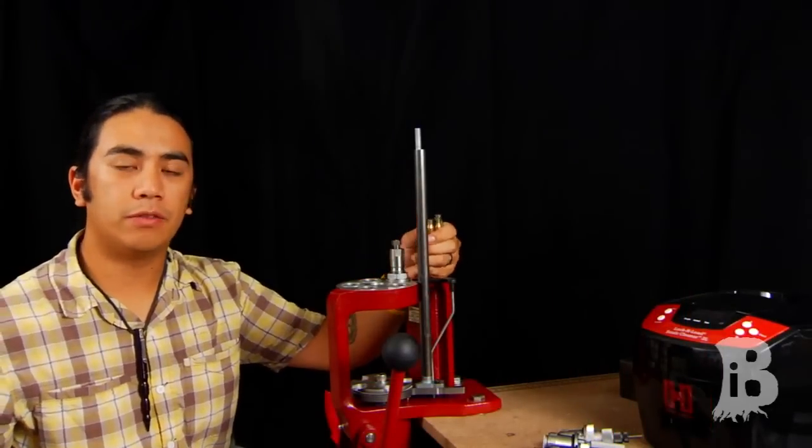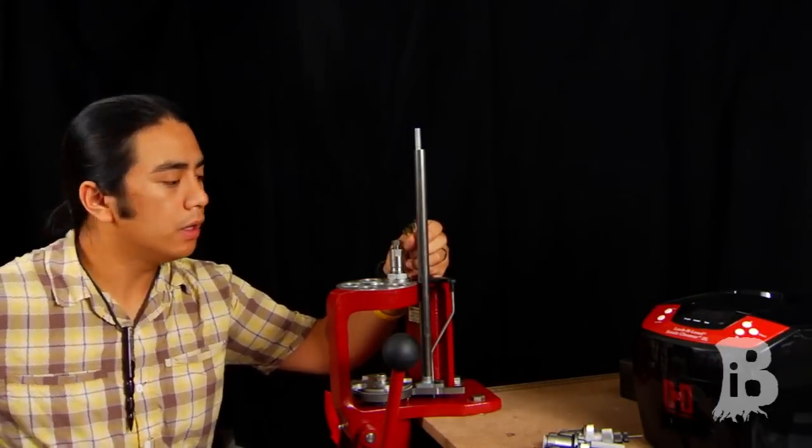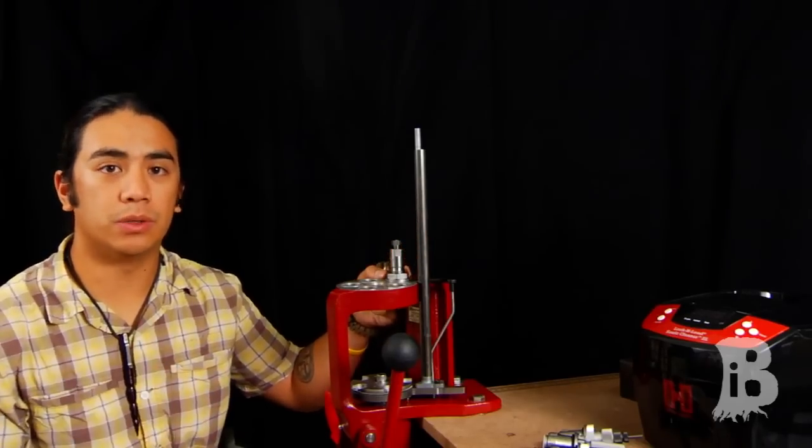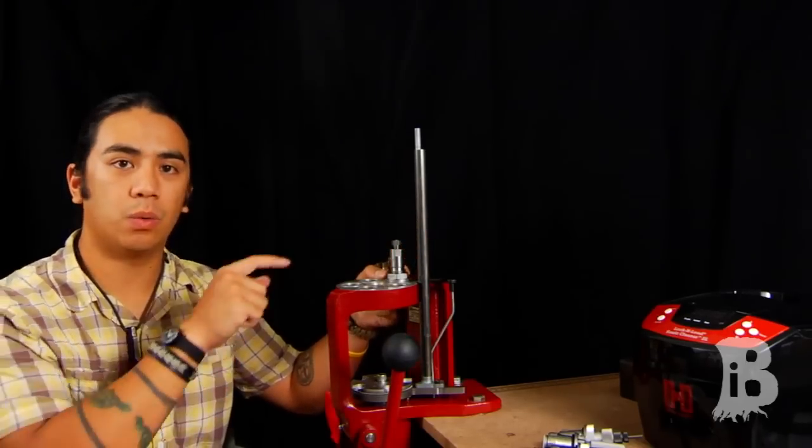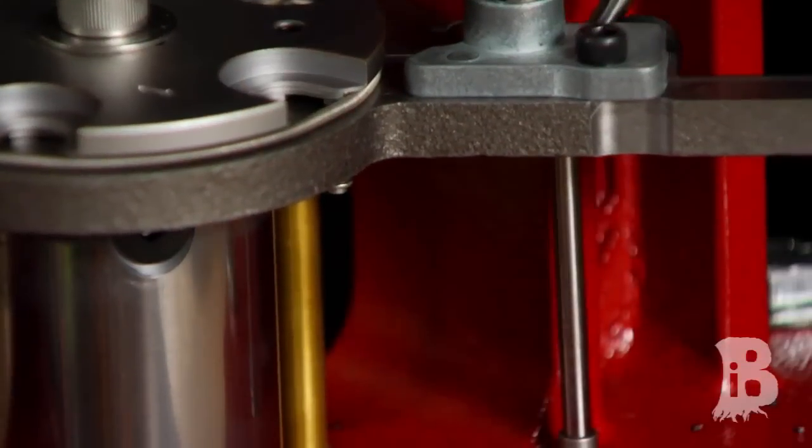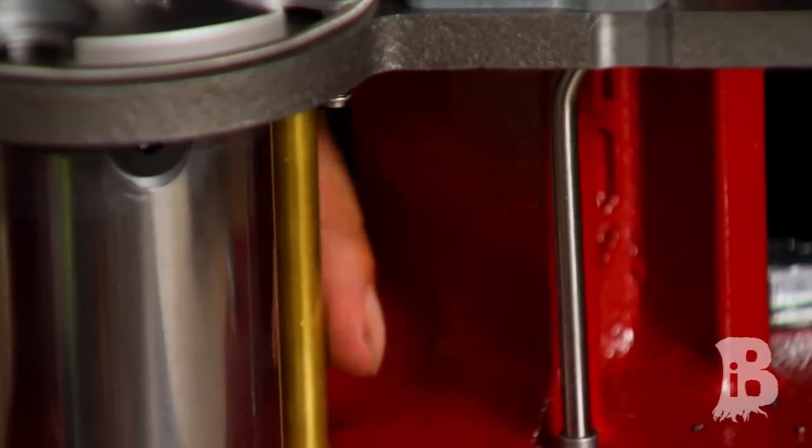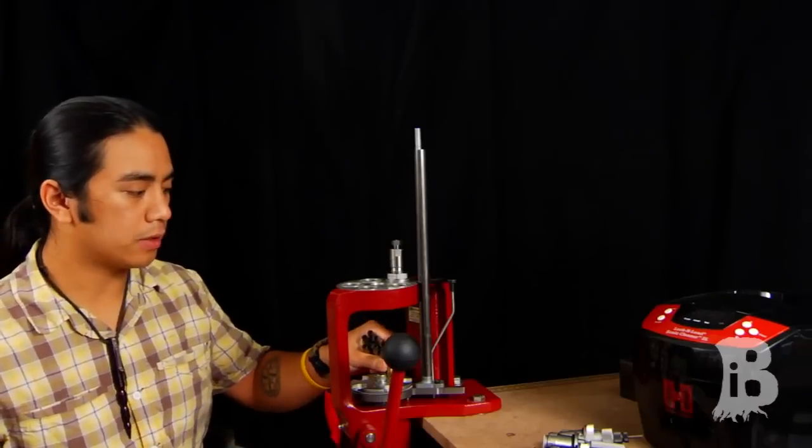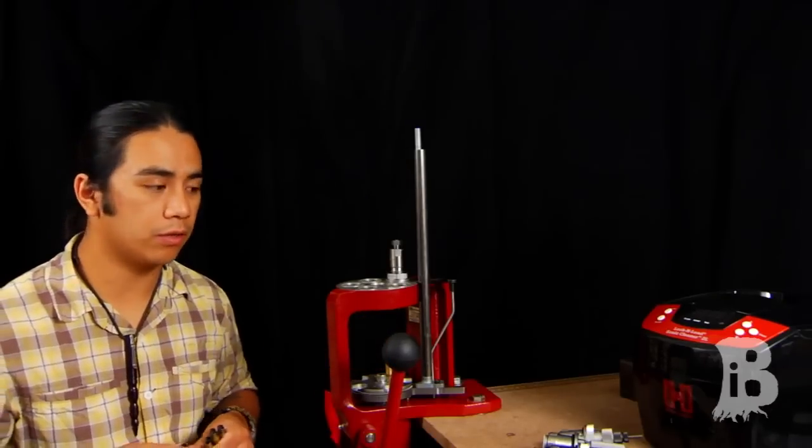Placement of your decapping die unless you have a single stage press is pretty important. With the Hornady, it actually collects all spent primers into a tube, and you have to identify which station the tube is going to be because that's going to make sure that all the primers go into the tube and stay nice and clean. Let's go ahead and start taking these primers out of all the cases.